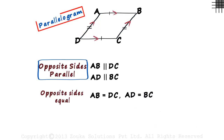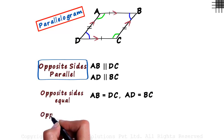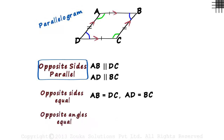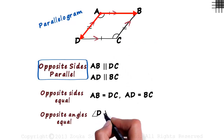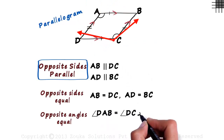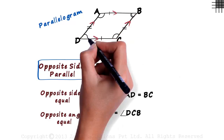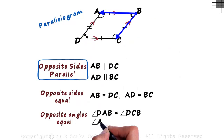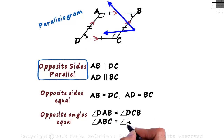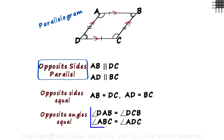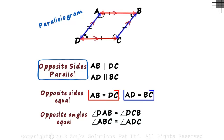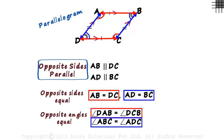In a parallelogram, the opposite angles are also equal. Opposite angles are angles which do not have a common side. This angle will be equal to this angle — angle DAB is equal to angle DCB. And this angle will be equal to this angle — angle ABC is equal to angle ADC. Remember, this is the basic property of a parallelogram: the opposite sides as well as the opposite angles are equal.